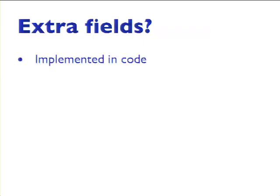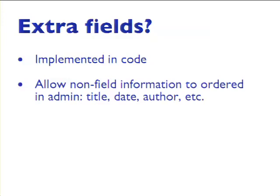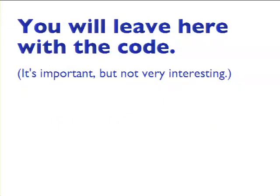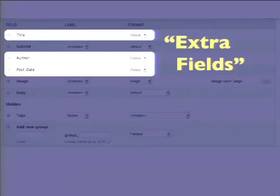What are extra fields? Extra fields are a not-very-well-known thing in Drupal 7 field API that you implement in code. They allow you to expose non-field information in the admin to be ordered alongside field information. So you can take things like title, date, and author — which you probably care about when creating your nodes — and allow them to be dragged up and down with the table drag and exposed. It's an alternative to doing things through preprocessing, and I think it's better because you can just do it in the admin. You will leave here with a URL that has a downloadable module showing you how to do this.